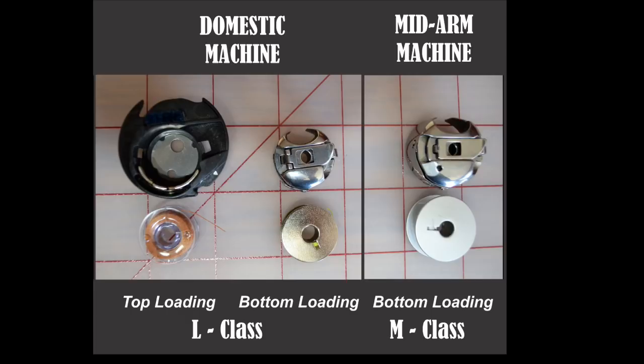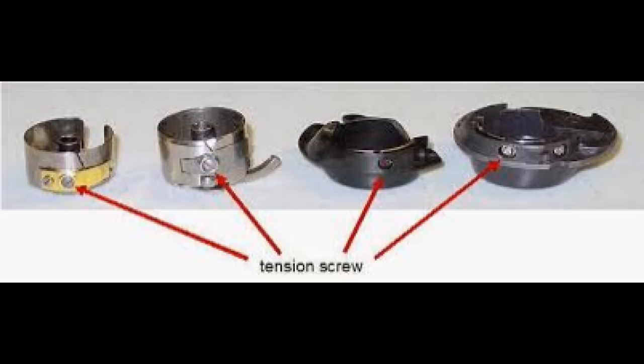One of the main differences between a domestic home machine and a sit-down quilting machine is the size of the bobbin. One is an L size, that's your domestic, and the sit-down quilter has an M size which is larger. You also have a difference in adjusting tensions. I always start with the bobbin tension on my sit-down quilter and have yet to touch the bobbin on my domestic home machine.